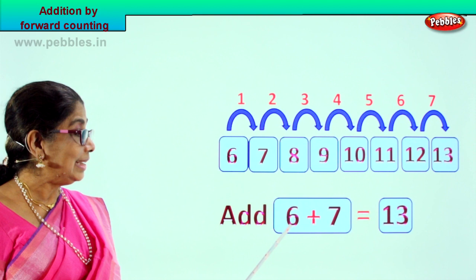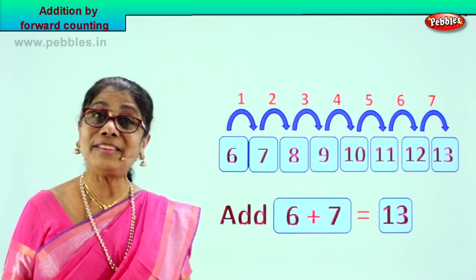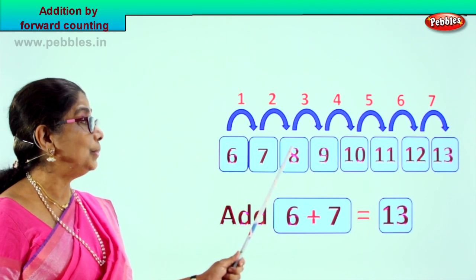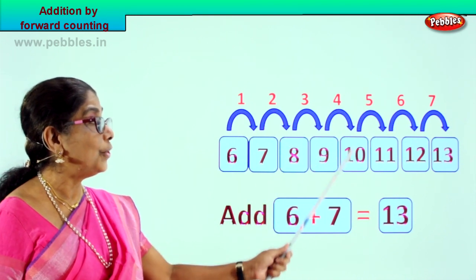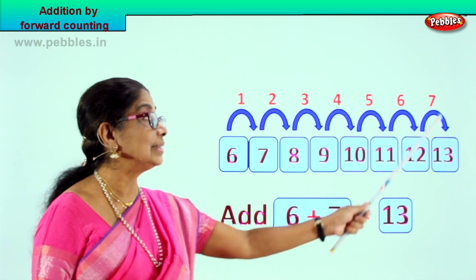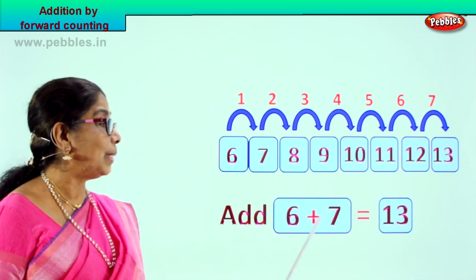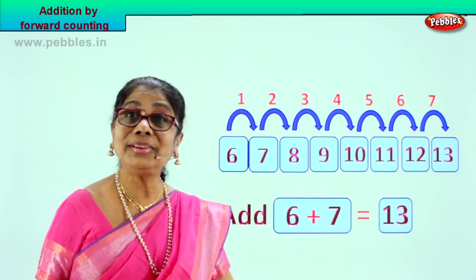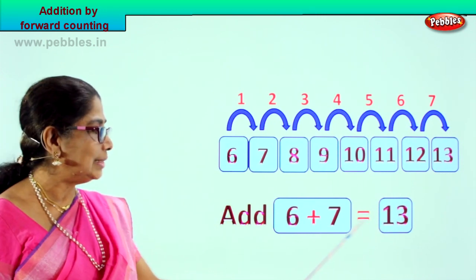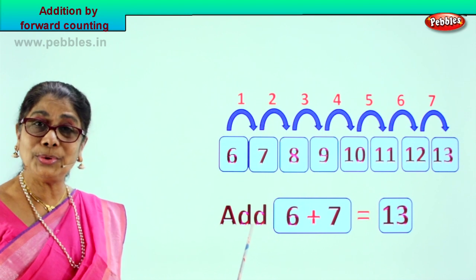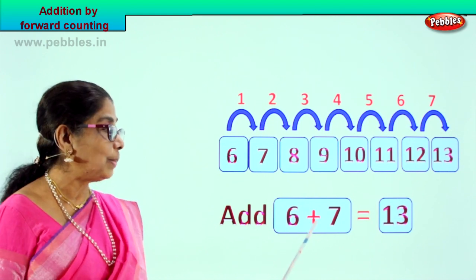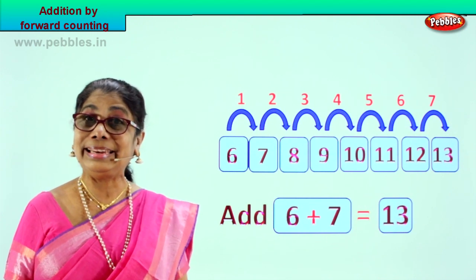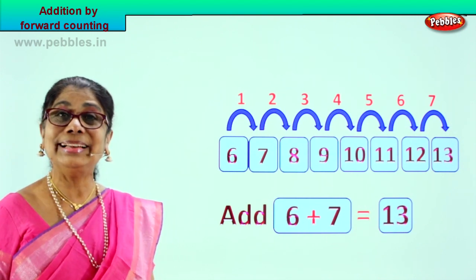6 and we counted 7 forward — 1, 2, 3, 4, 5, 6, 7. So 6 plus 7, what is your answer? 13. Did you enjoy this? So we add 6 plus 7 equal to 13.